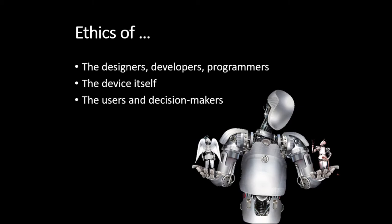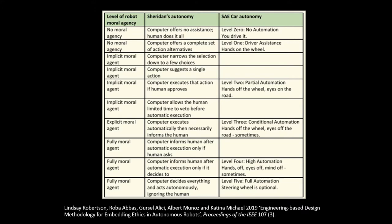Determining where we draw the lines is often not all that straightforward. This is a table in a paper by Lindsay Robertson and her colleagues, and it seeks to illustrate the alignment between ethical agency and autonomy. From an archaeological perspective, we might see the line as falling between implicit and explicit agency, emphasising that the role of the devices we use is focused upon support — assisting and complementing us as the human user. According to James Moore, implicit agency in devices avoids unethical outcomes by implicitly incorporating ethical behaviour in the software, in things like decision support systems and autopilots.